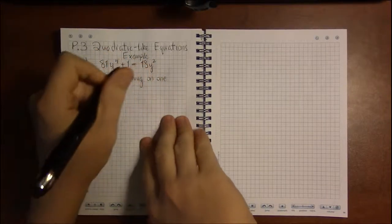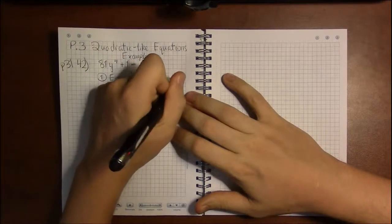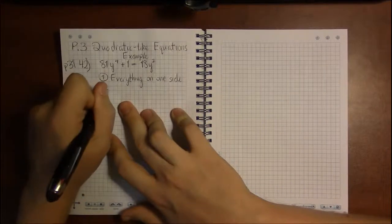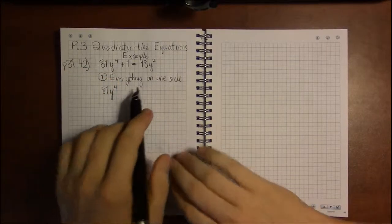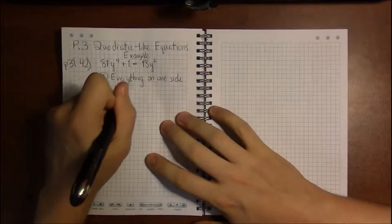Doing it now kind of makes the substitution a little bit easier, which is a problem. It's kind of hard to tell what should I let u be. In this case, I'm going to subtract 18y squared from both sides.